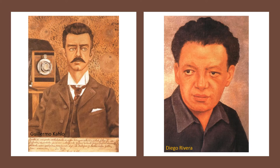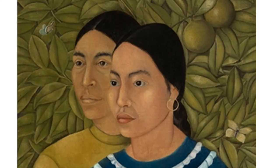On the left we have a portrait of her father, who was also an artist and was into science — he had a camera at a time when not many people had cameras or knew how to develop their own film. On the right is her husband, whom she married just a couple of years after she recovered from her accident. His name was Diego Rivera and he is a famous painter as well.